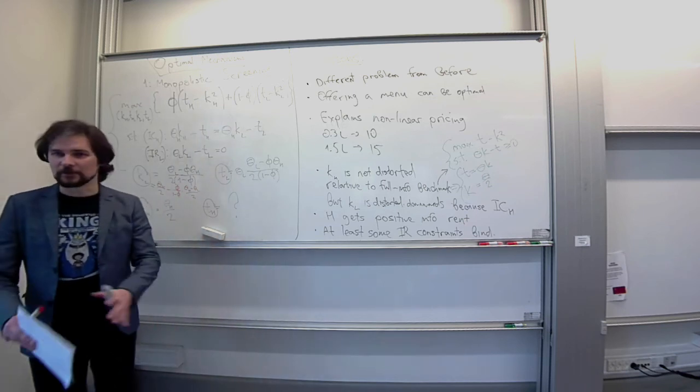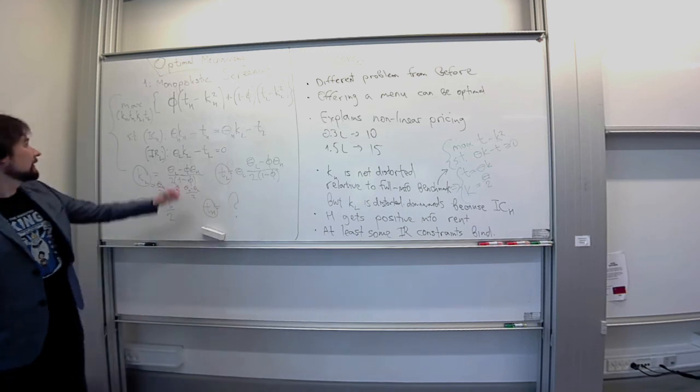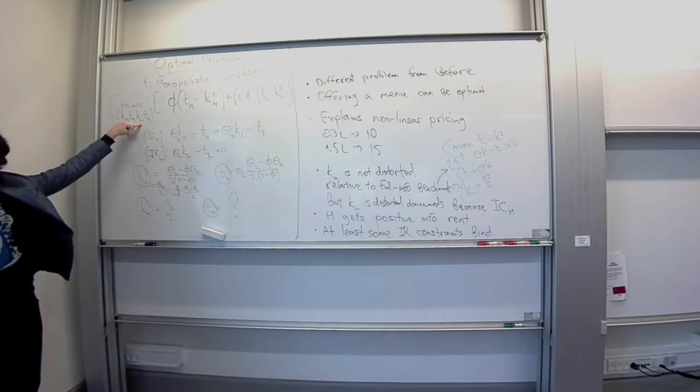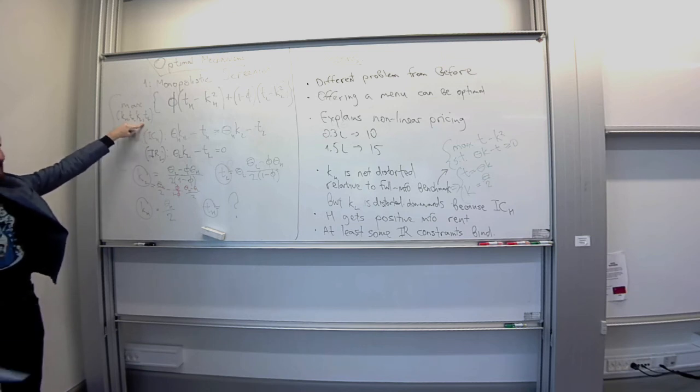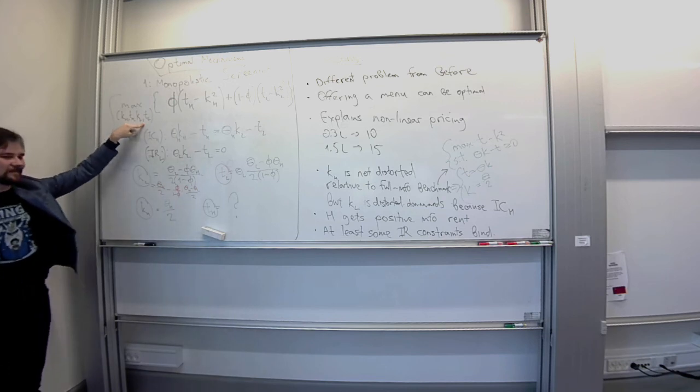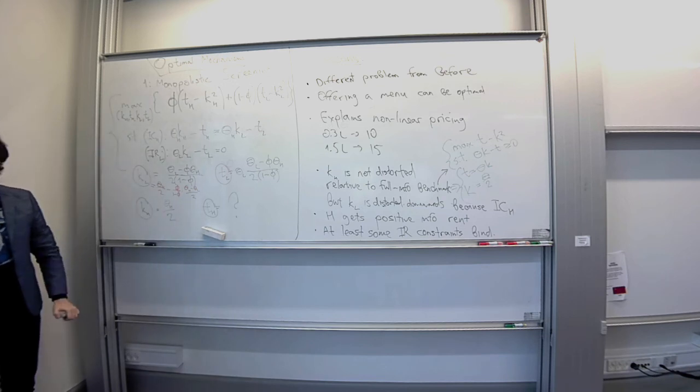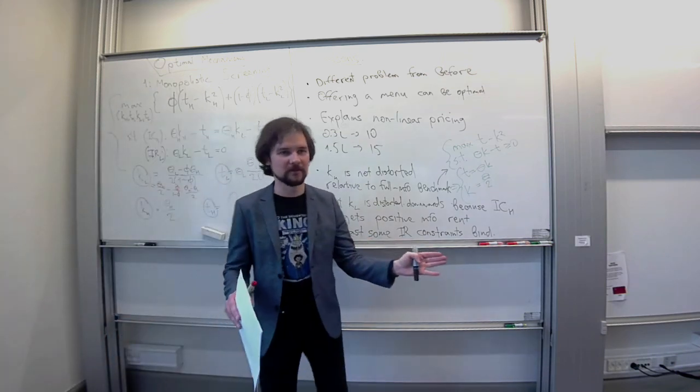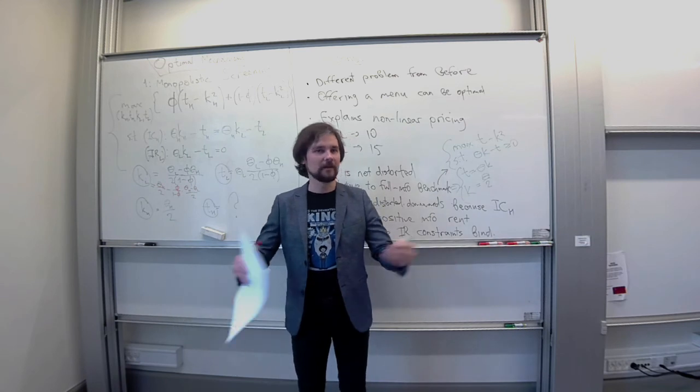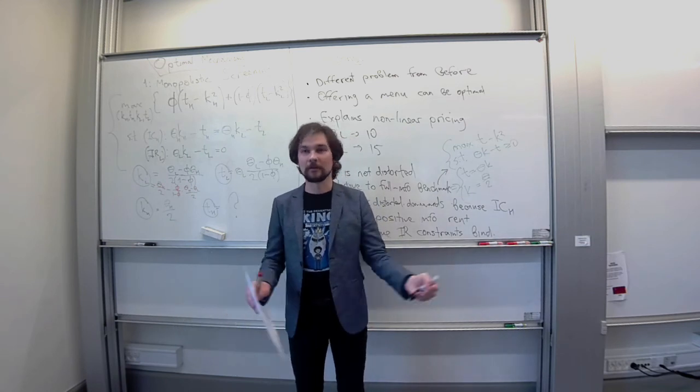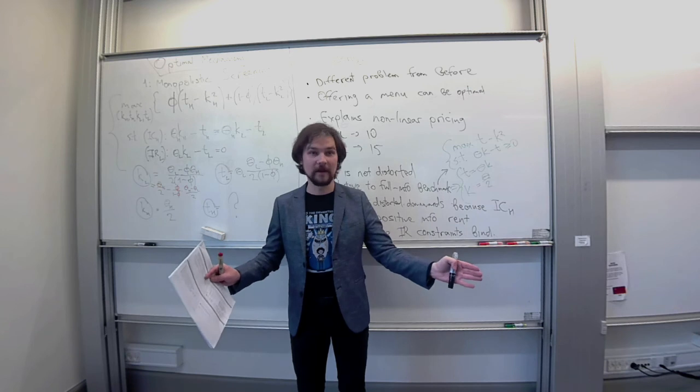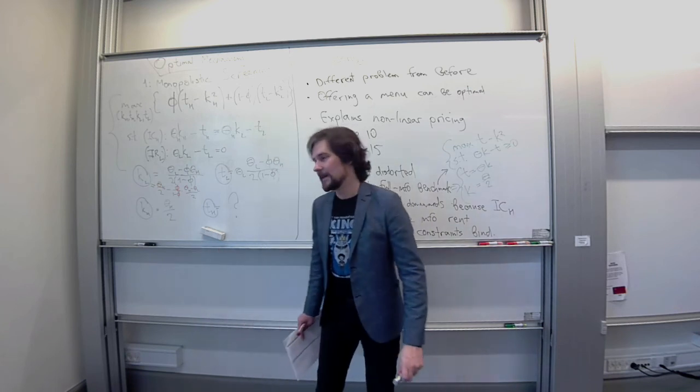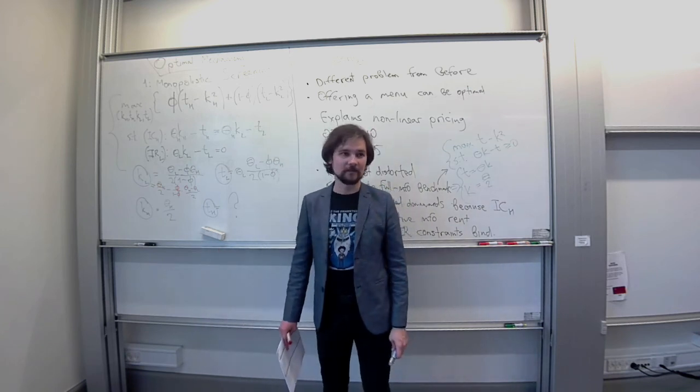And the main thing that we will generalize in this problem is the domain of preferences of the buyer. Here, to guarantee that the mechanism exists, I guess to some extent, we put a very restrictive assumption on what preferences the buyer can have. We said buyer's preferences are one of the two types. Either high valuation or a low valuation. Now, we will relax this, we will allow the buyer to have one of the continuum of valuations, of the interval of valuations. And we will try to solve that more difficult problem.